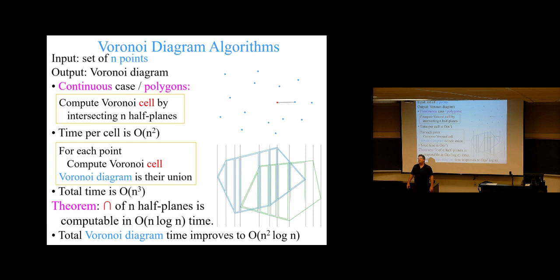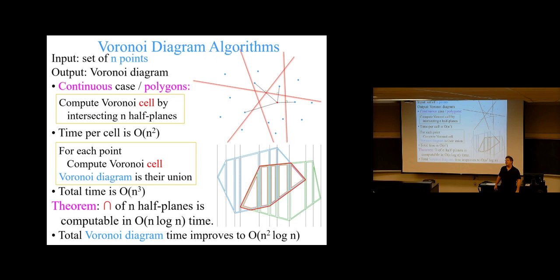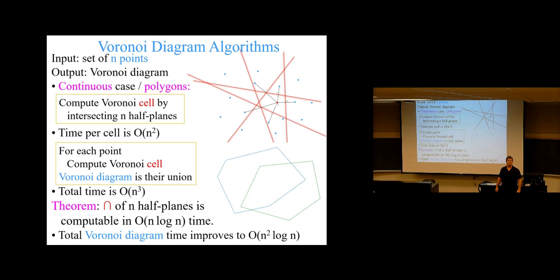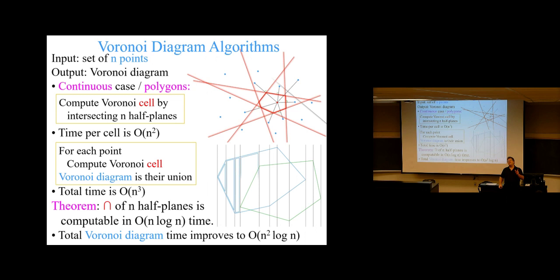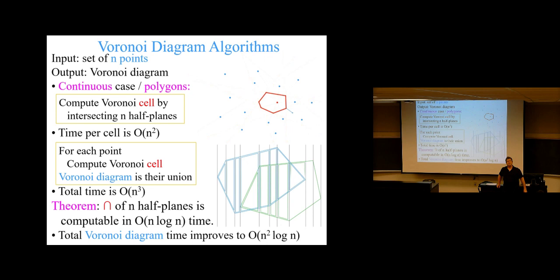The bottom line is this algorithm eventually gets down to n squared log n to compute the entire Voronoi diagram of n points. Now there's a much more complicated algorithm — that's from Shamos's thesis in 1977. He found the combination of computational geometry with this thesis, which is quite a monumental achievement. He gives an n log n algorithm for the entire Voronoi diagram — not n squared log n. It's basically a divide and conquer like merge sort — you divide into two halves and merge together, stitching along the middle. The stitching part is very tricky.